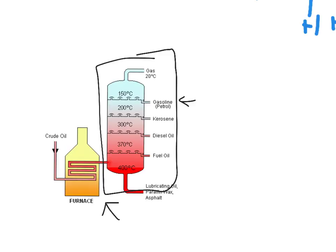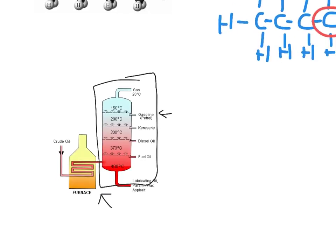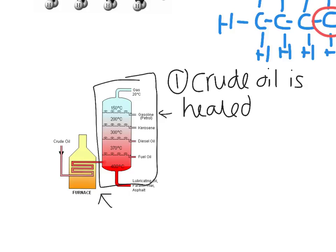Now if we had to sum up the process of fractional distillation into easy steps to remember, the first step would be: one, the crude oil is heated to a vapor.